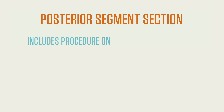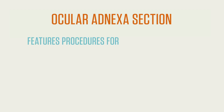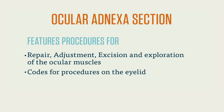The posterior segment section includes procedures on the retina and vitreous, including repairs for retinal detachment. The ocular adnexa section features procedures for the repair, adjustment, excision, and exploration of the ocular muscles. In the ocular adnexa section, you'll also find codes for procedures on the eyelid.